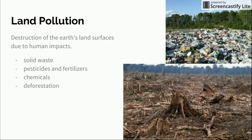Land pollution is the destruction of Earth's land surfaces due to human impacts. This includes solid waste, pesticides and fertilizers, chemicals, and also deforestation. You can see here an example of solid waste, and down below, deforestation where we're clear-cutting or cutting all the trees out of an area.